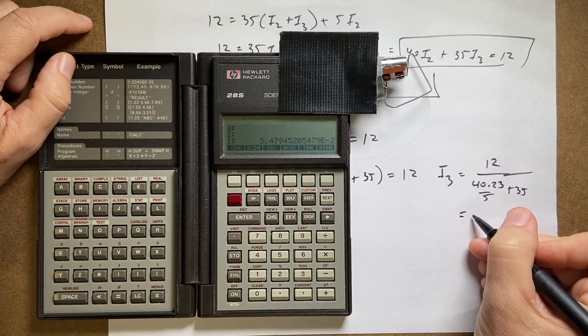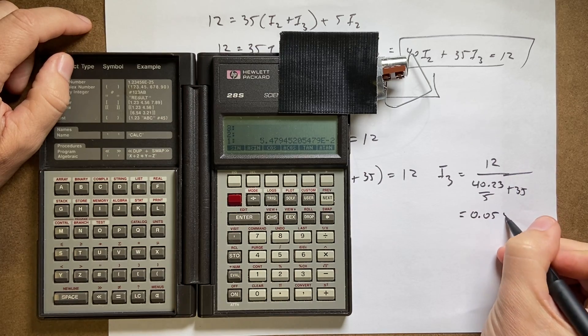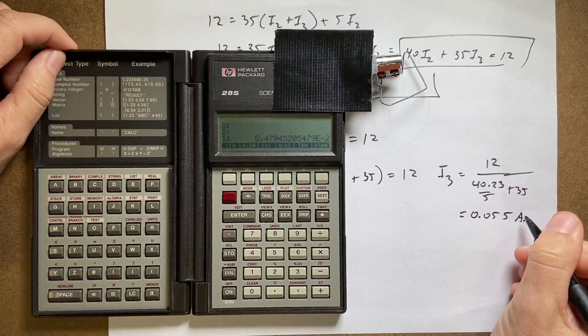So then I get this: I get 0.055 amps. That's i3.